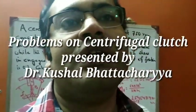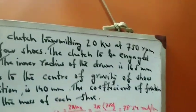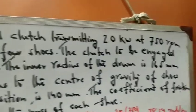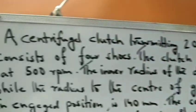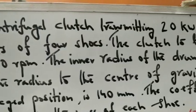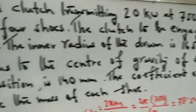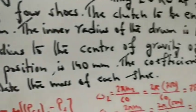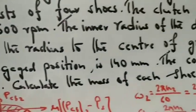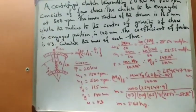We'll be discussing some problems on centrifugal clutch. The first problem: a centrifugal clutch transmits 20 kilowatt at 750 rpm and consists of four shoes. The clutch is to be engaged at 500 rpm. The inner radius of the drum is 165 mm, while the radius to the center of gravity of the shoes in the engaged position is 140 mm. The coefficient of friction is 0.3. Calculate the mass of each shoe.